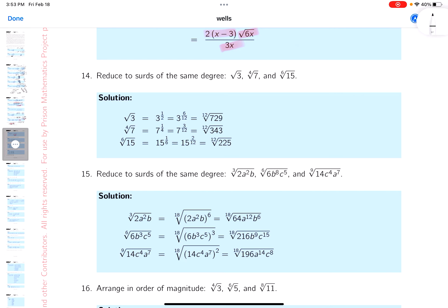Okay, they want us to write this with the same index. The first one's 3 to the one-half power, the second one is 7 to the one-quarter power, and the third one is gonna be 15 to the one-sixth power. Now what's a common denominator there? It would be 12.